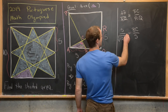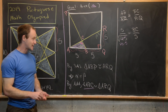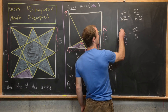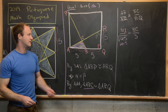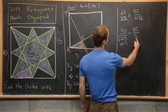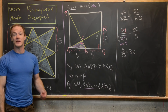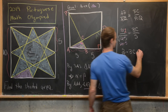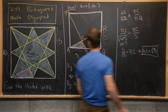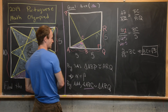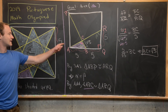We rewrite 125 as 25 times 5, factor the 25 out of the square root to get 5√5 for AR. So the proportion becomes 5 over 5√5 equals BC over 5. Simplifying: 5 over 5√5 equals 1 over √5, so BC equals 5 divided by √5, which equals the square root of 5. We now have BC equals √5.